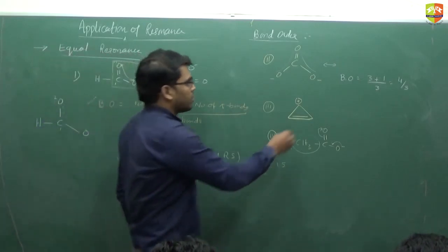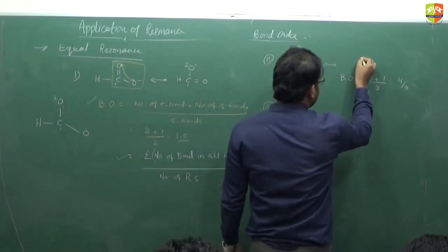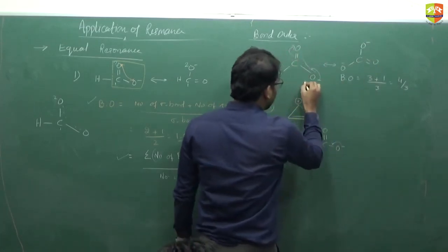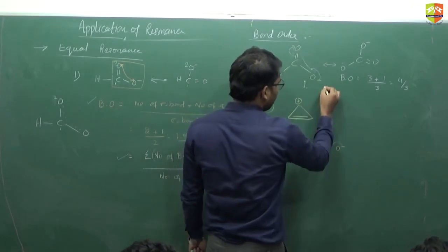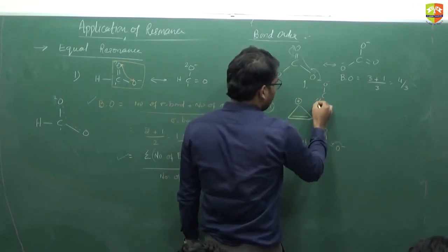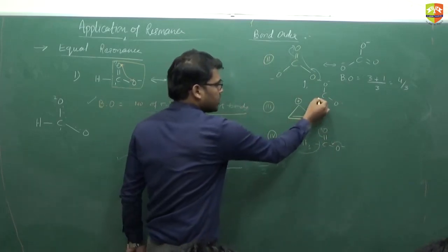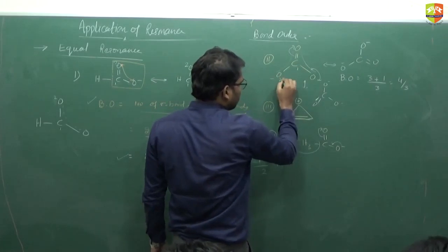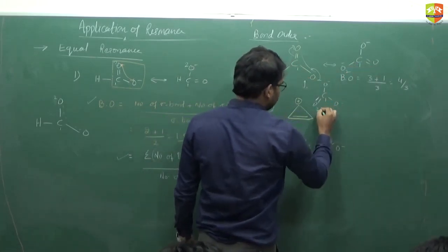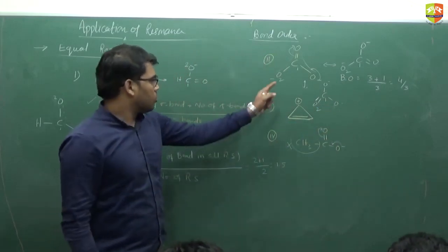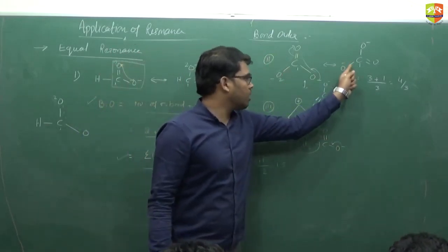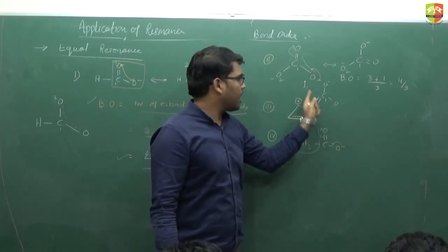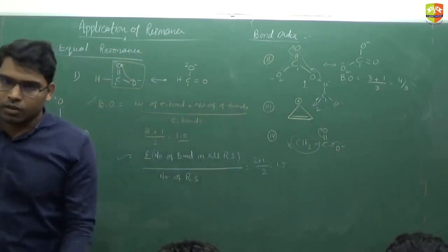Using the second formula for CO₃²⁻, we get three resonating structures. Taking one C-O bond: 1 bond + 1 bond + 2 bonds = 4 total bonds, divided by 3 resonating structures, gives 4/3. Both formulas agree. Note that if one part of the molecule is not in resonance, it is not counted in the formula — for that part, bond order would be 3/2.